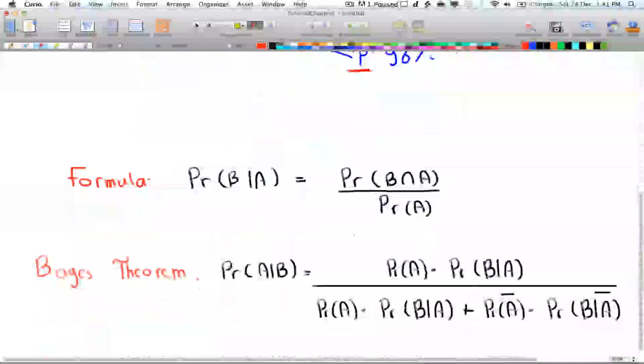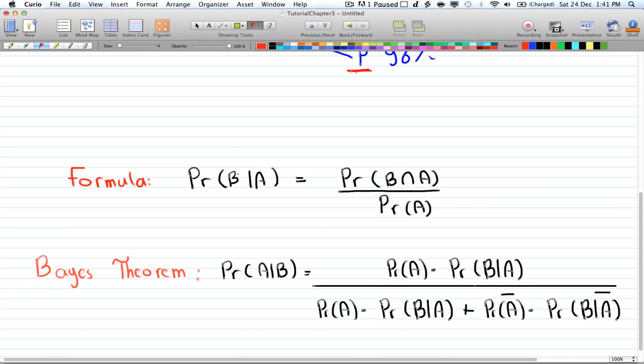So the formula for it is the probability of B given A, and is B given A, is equal to the probability of B intersection A divided by the probability of A.